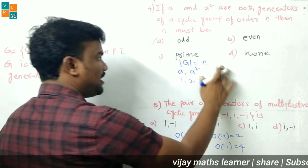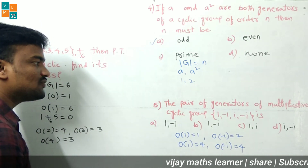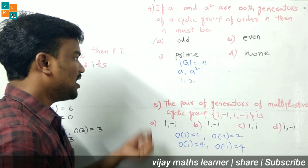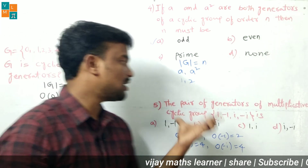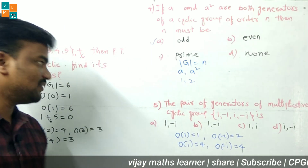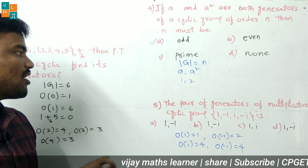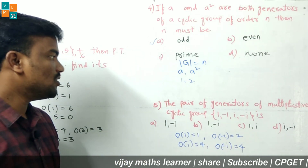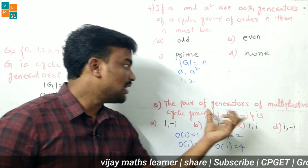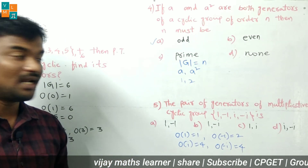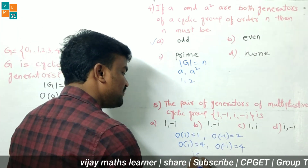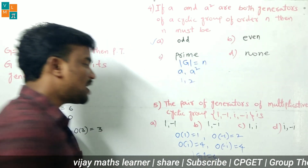The fifth question: find the pair of generators of the multiplicative cyclic group {1, −1, i, −i}. This is a group under multiplication, and we need to find its generators. The order of the group is 4.